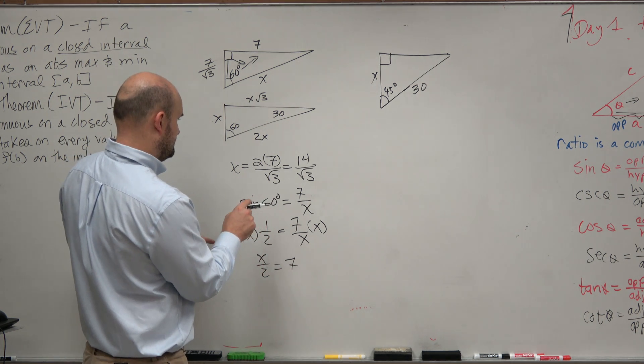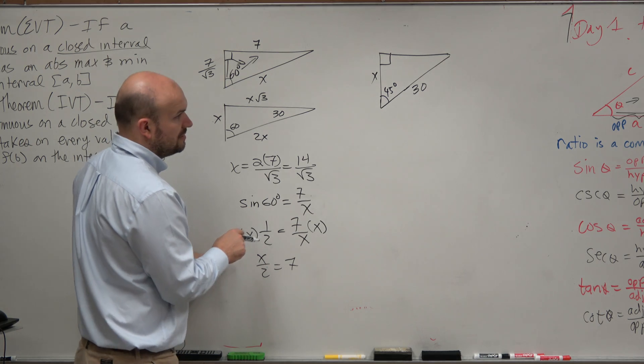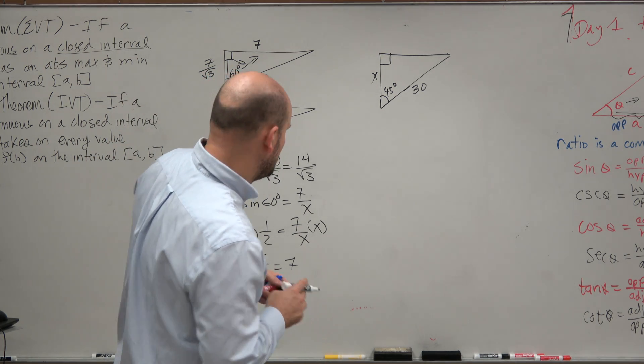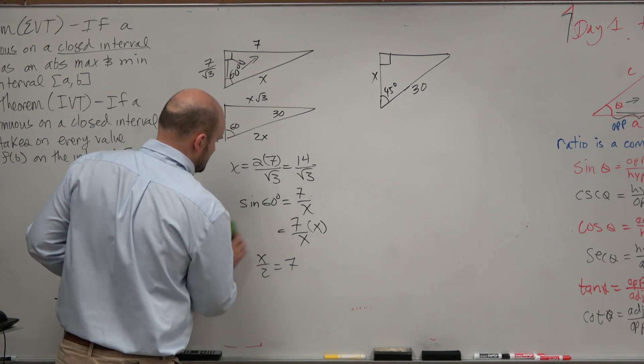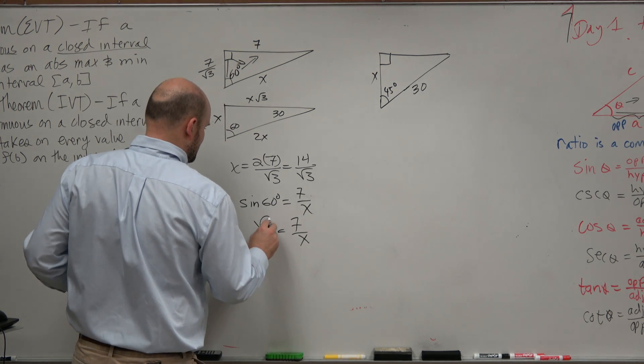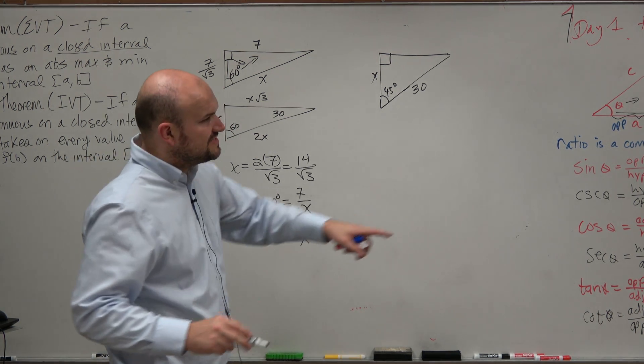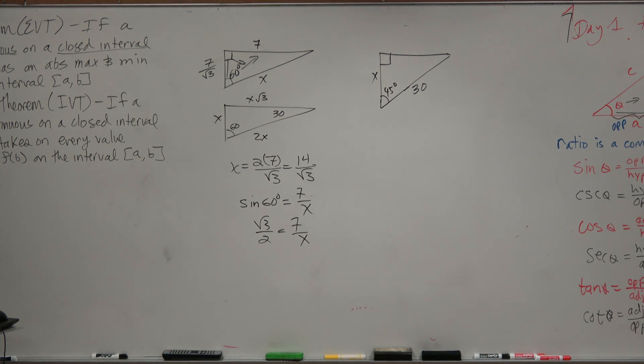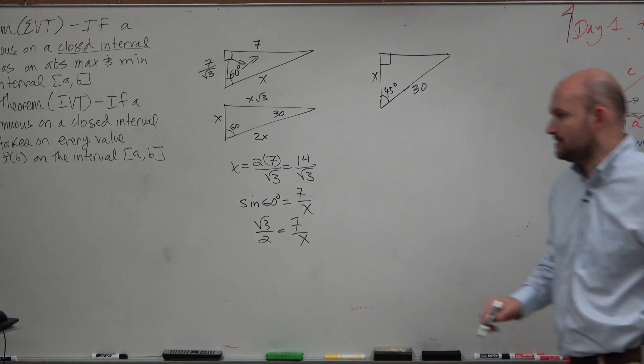What am I getting? Sine of 60 degrees. No, guys. It's square root of 3 over 2. The sine of 60 degrees, sine is opposite over hypotenuse, square root of 3 over 2.